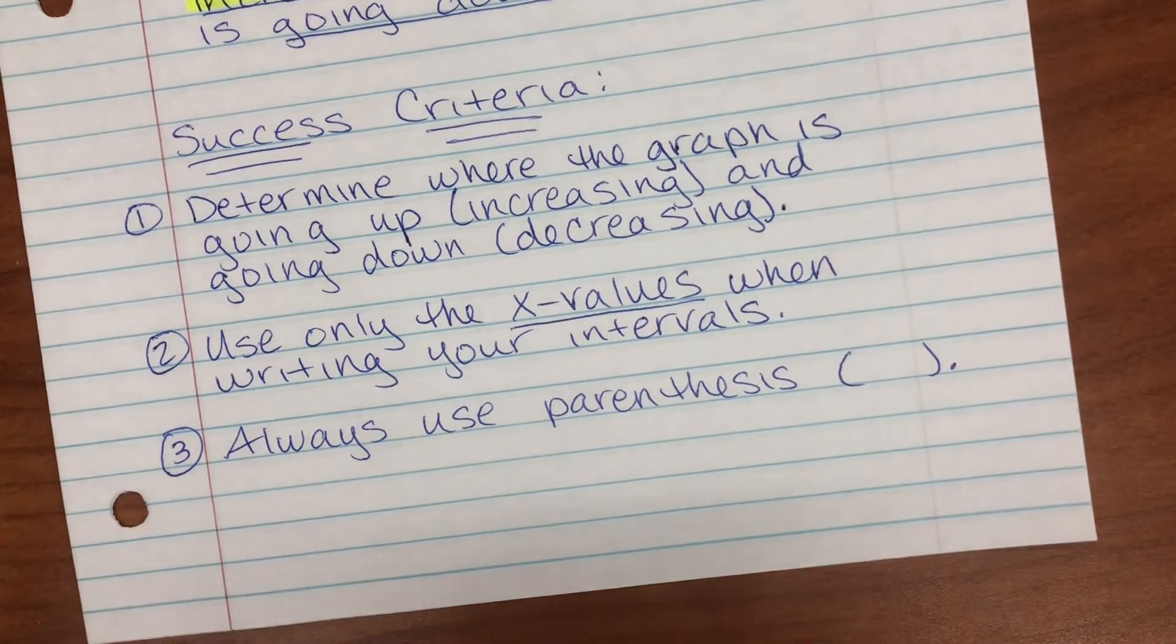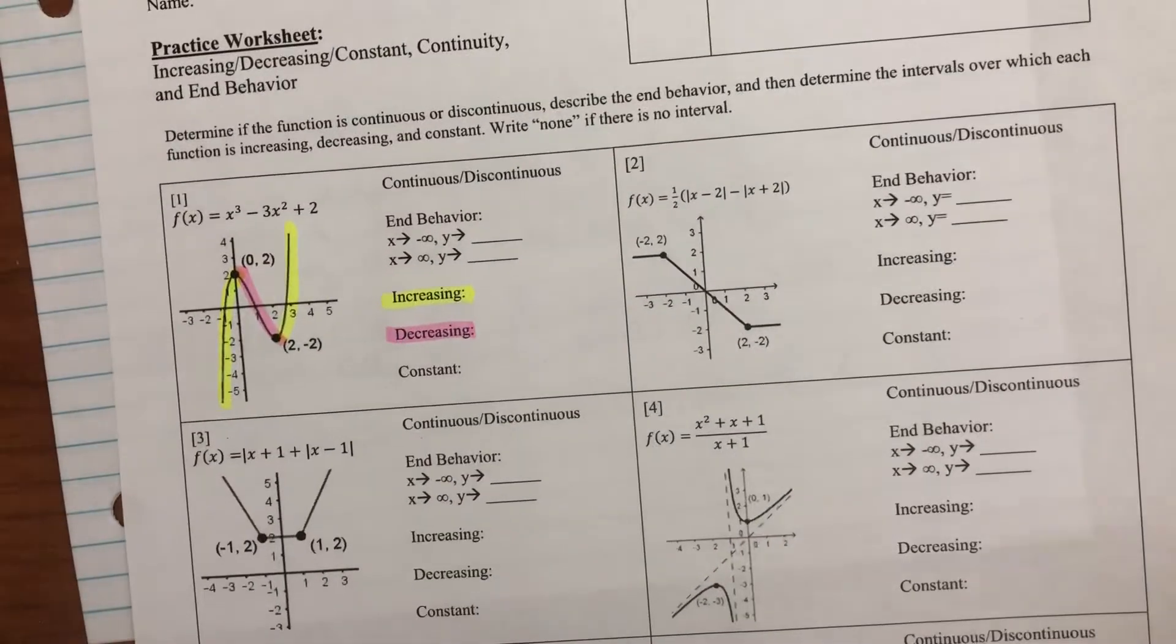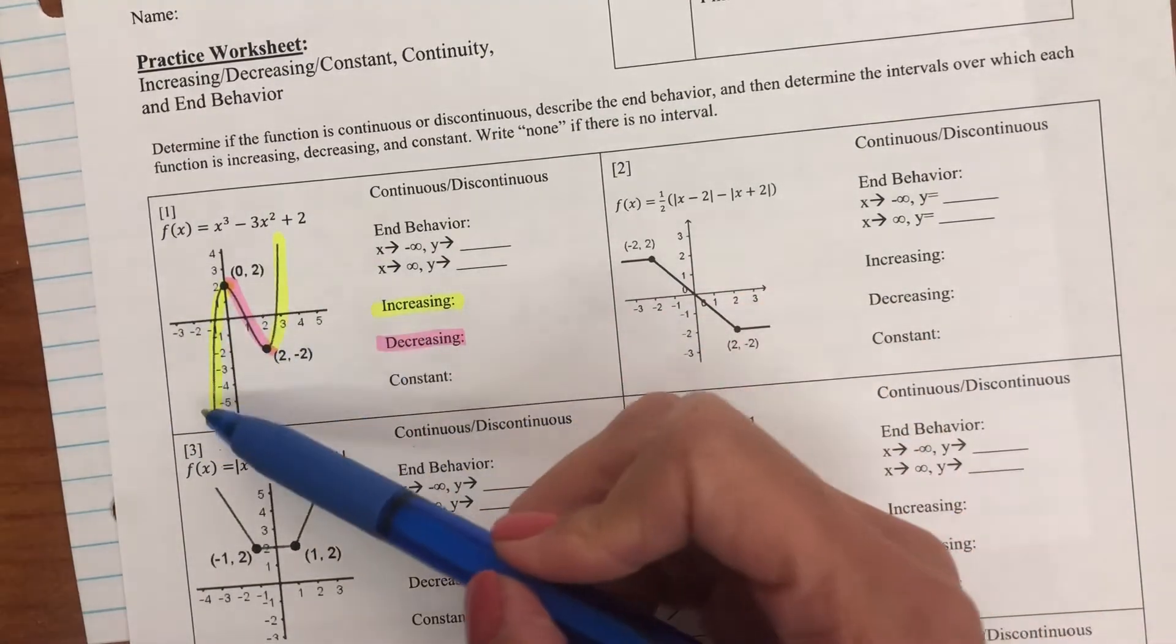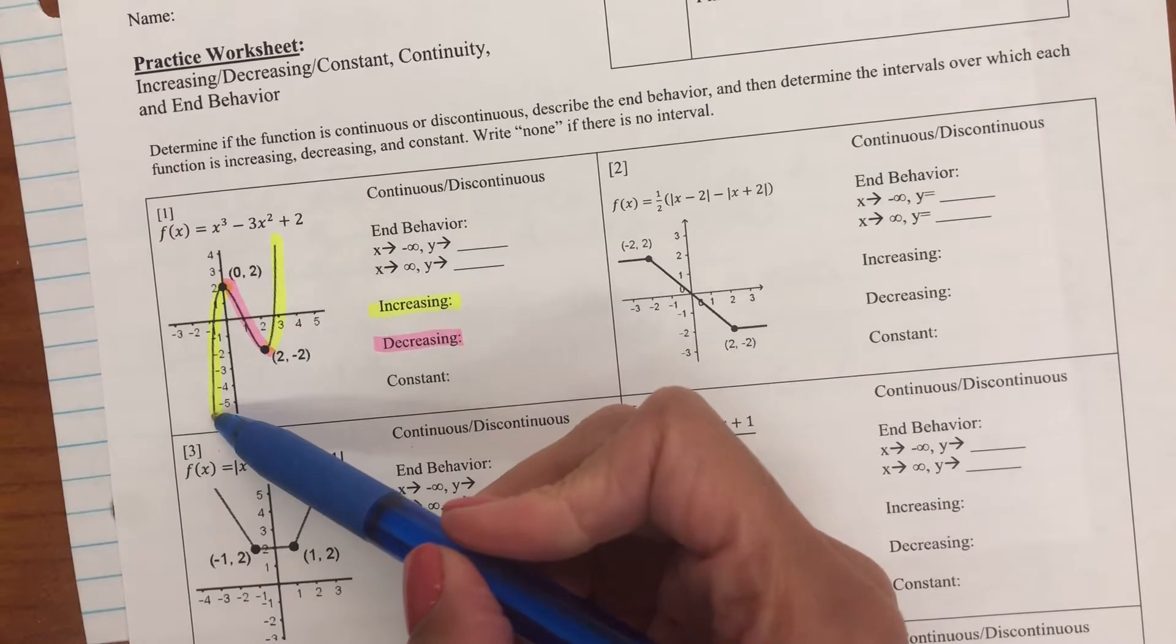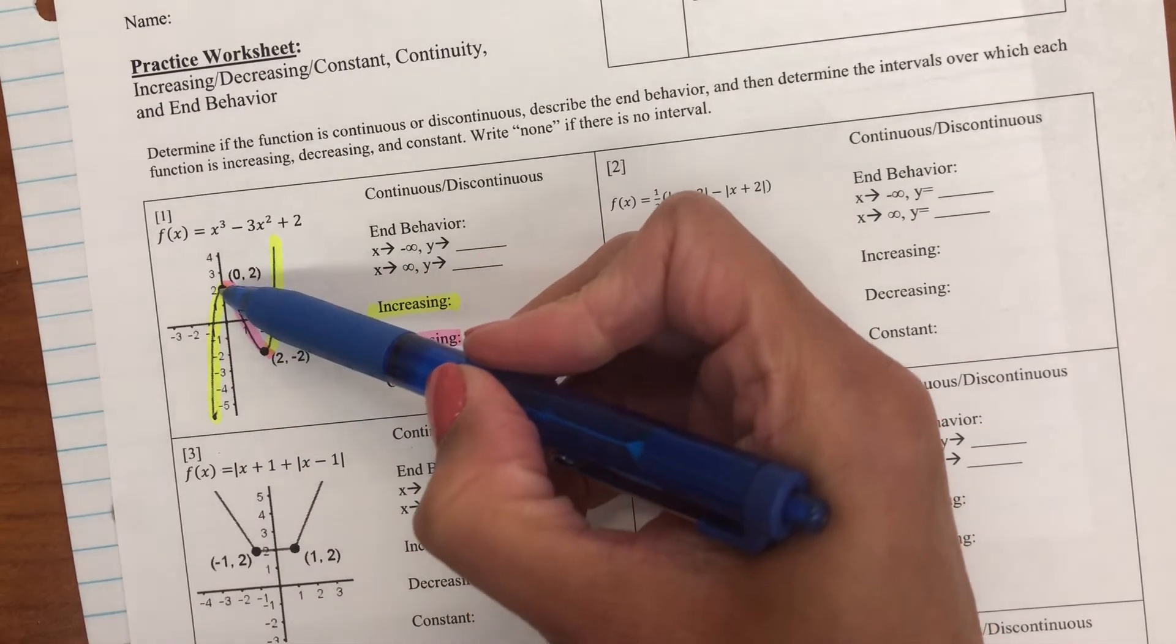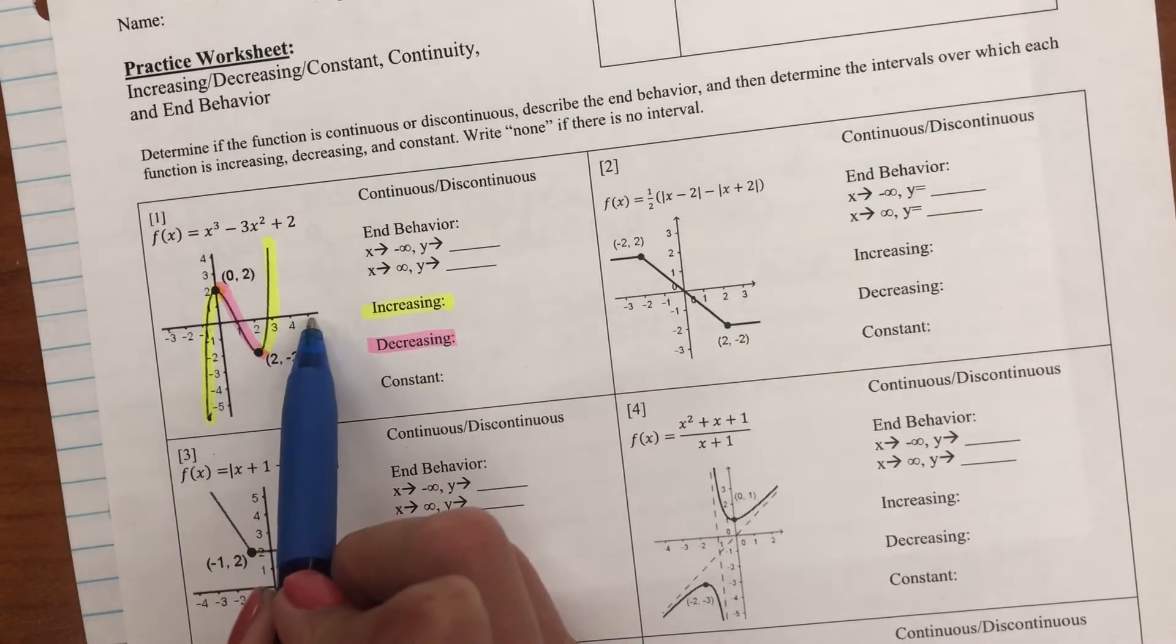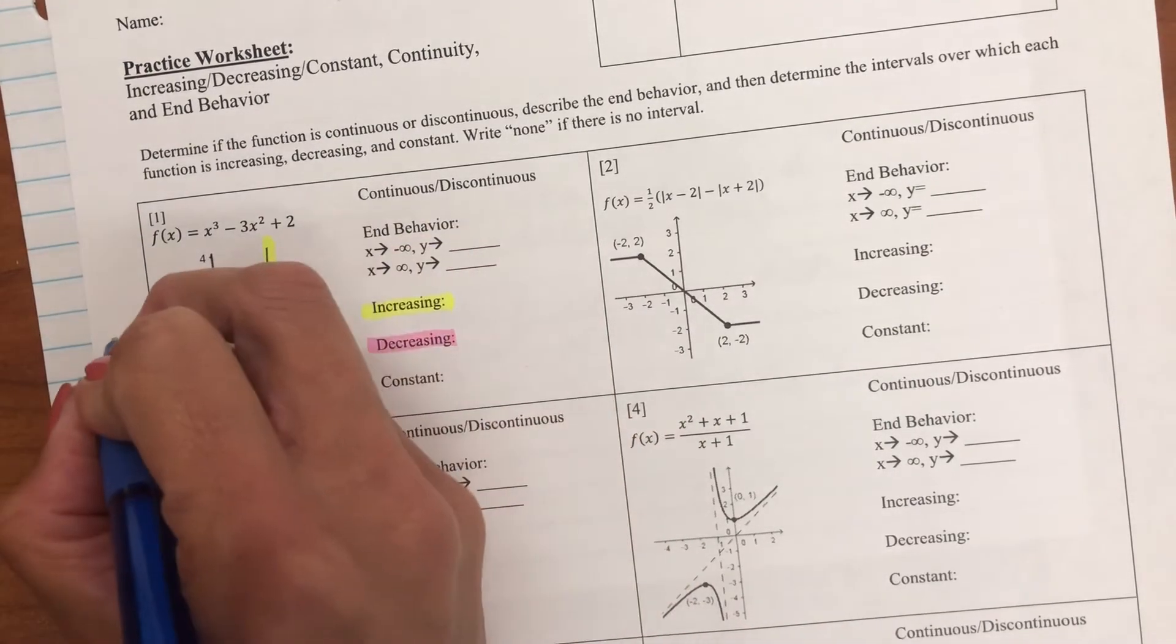Let's look at that. I'm going to do that same graph here. Let's do the increasing intervals. I'm reading left to right, starting here and going to here. And remember, I'm only using x values, only these values here on the x-axis.